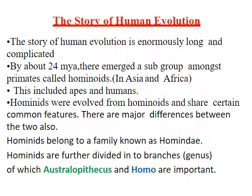By about 24 mya, a subgroup among primates called hominoids emerged in Asia and Africa, including apes and humans. Hominids evolved from hominoids, sharing certain common features but with major differences between the two. Hominids belong to a family known as Hominidae. Hominids are further divided into branches called genus, of which Australopithecus and Homo are the most important.